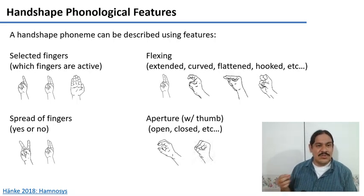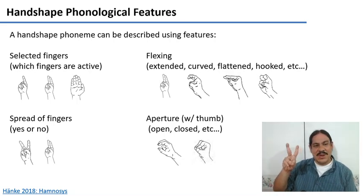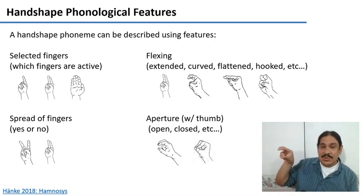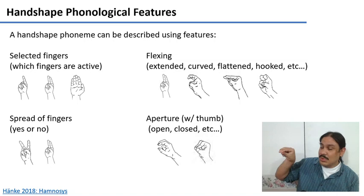We also have the feature of spread, whether your fingers are spread or not during the sign. We have the feature of aperture, which describes the relationship with your thumb. For example, a sign that's open or closed.